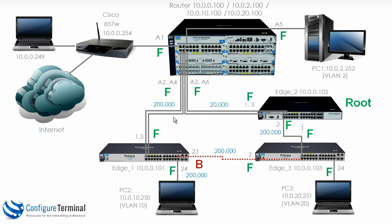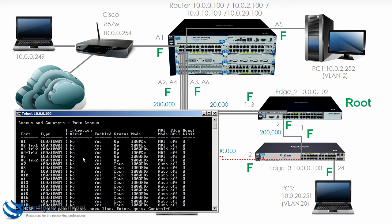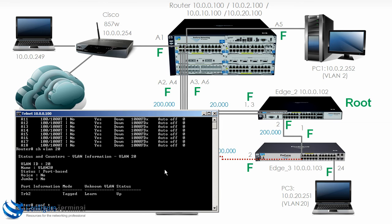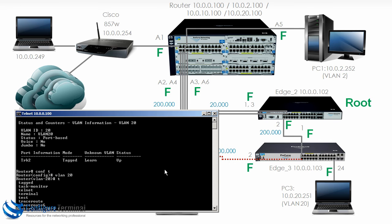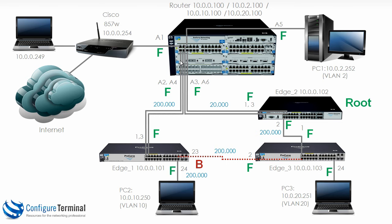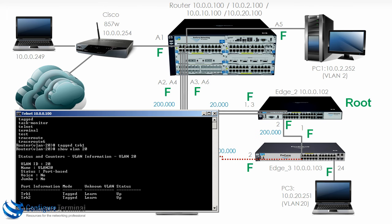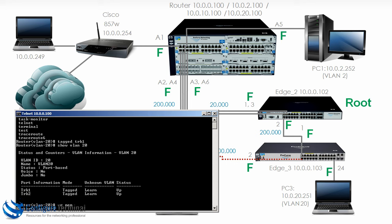So what we need to do is allow VLAN 20 across this link as well as this link. Let's start with the router. Show VLAN 20 shows it's only been enabled for TRK 2. So VLAN 20 tagged TRK 1 — that will allow VLAN 20 from the router to edge 1. Typing show VLAN 20 now shows it's tagged for both TRK 1 and TRK 2. I'll save the config.